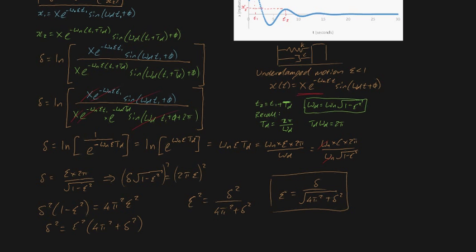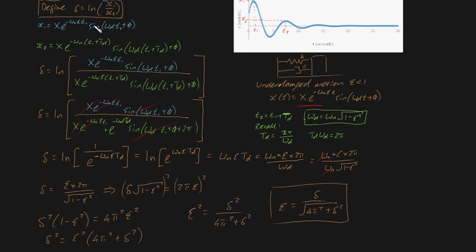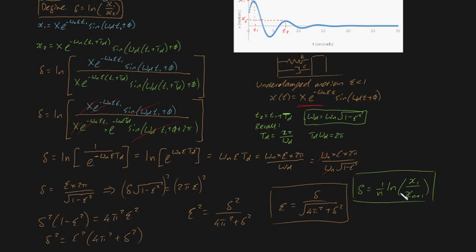This is an amazing result. And by the way, delta was defined as the natural log of x1 over x2, where x1 is the maximum displacement at the first peak and x2 is the maximum displacement at the second peak. This definition also generalizes: delta equals (1/n) times the logarithm of x1 over x_(n+1), which holds true as well. Notice that the original definition is just a special case of this when n equals 1. This is logarithmic decrement — very useful for determining the dampening ratio and hence the dampening constant, so it's incredibly important for vibrations.